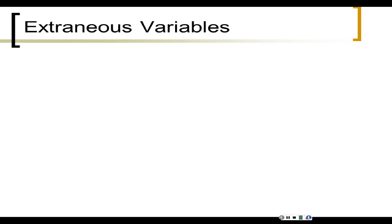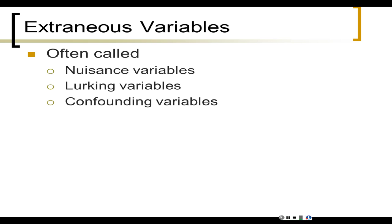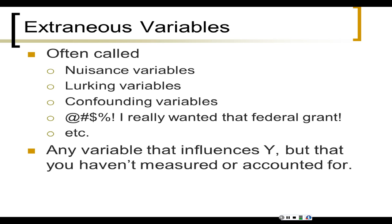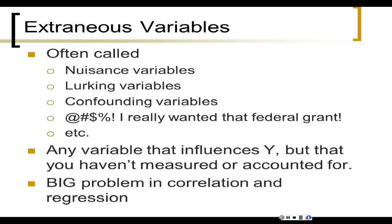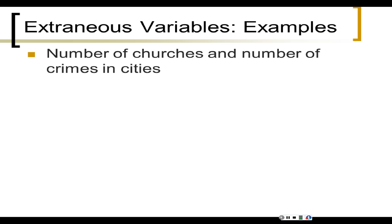The final thing we're going to talk about is extraneous variables — sometimes called nuisance variables, lurking variables, or confounding variables. This means any variable that is influencing your dependent variable but that you are not aware of. These are a huge problem in correlation and regression analysis. For example, the number of churches in a town and the number of crimes committed in that town are strongly positively related — but not because church causes crime. A really obvious variable has been left out: population. That's why for these examples we usually say per capita — churches per capita and crimes per capita — and then there's no serious relationship anymore.